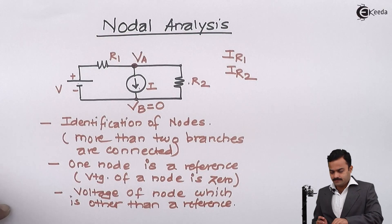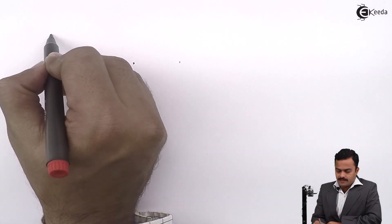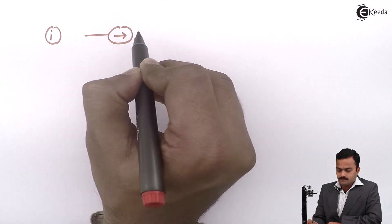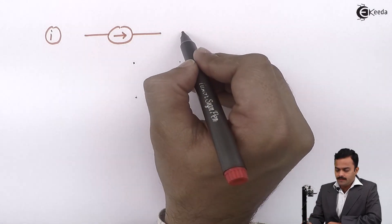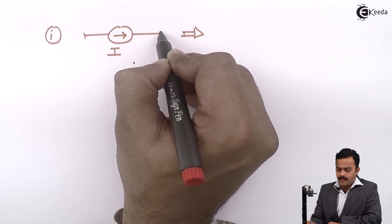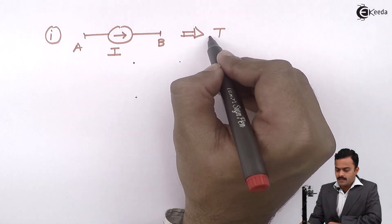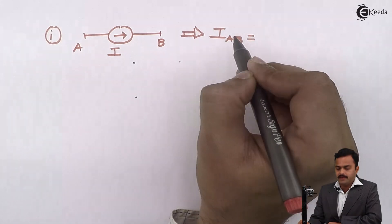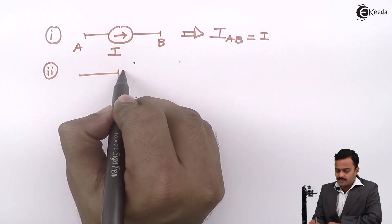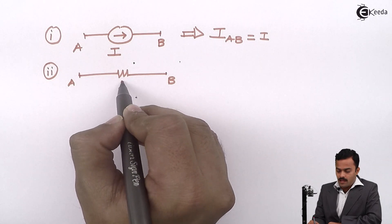To find the branch currents, let's use three simple techniques. Technique number one: suppose there is a resistance R between two nodes or two points.